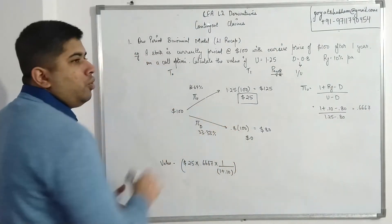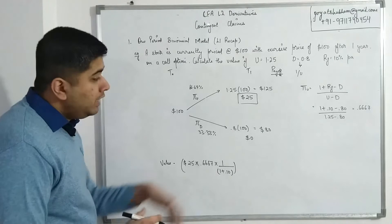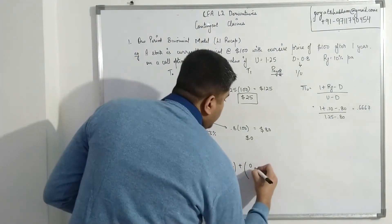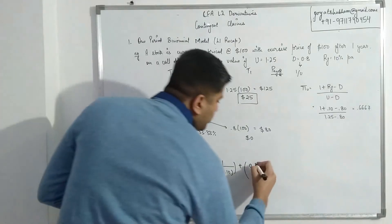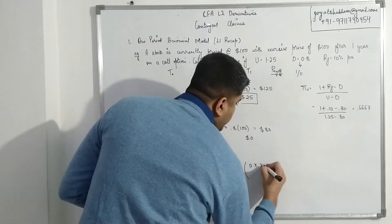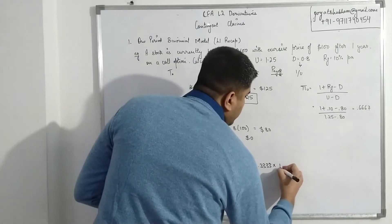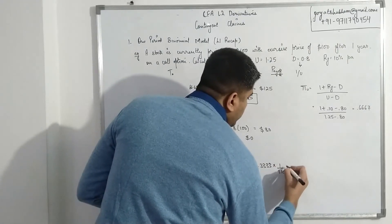The second node is going to be 0, because I'm not receiving anything. What are the chances of receiving this? 0.3333, multiplied with 1 divided by 1.10.